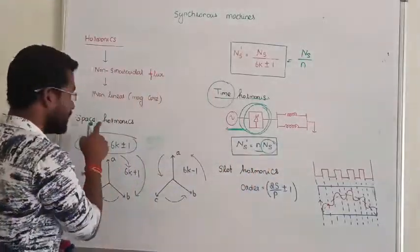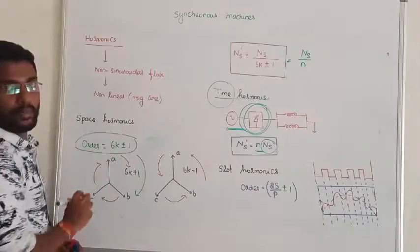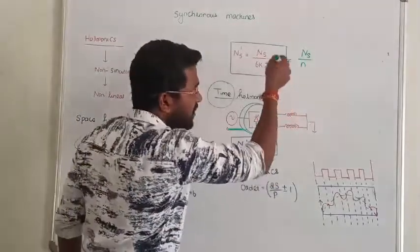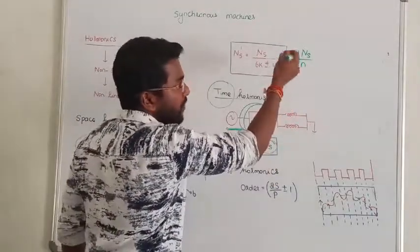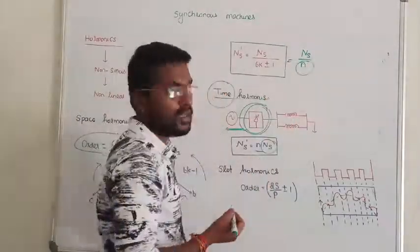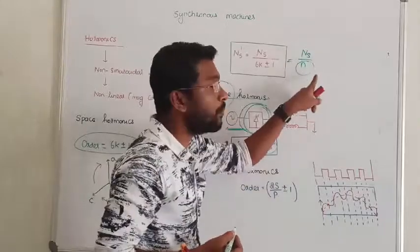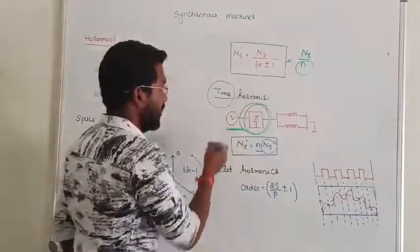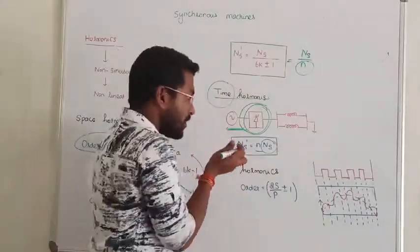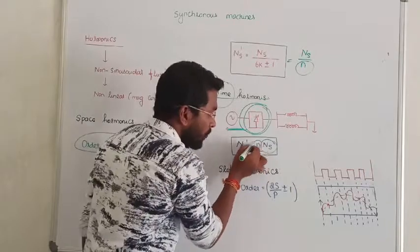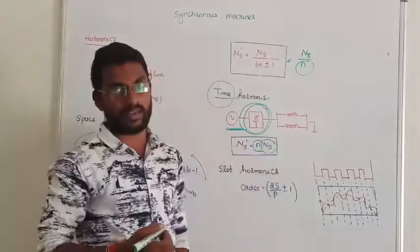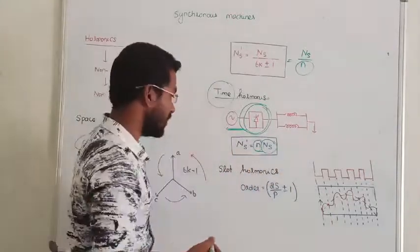See the difference: in the case of space harmonics, the resultant speed after the machine is affected by the order is Ns divided by N. Whereas in time harmonics, the resultant synchronous speed of the machine becomes the order of the harmonics multiplied by the synchronous speed. That's all.